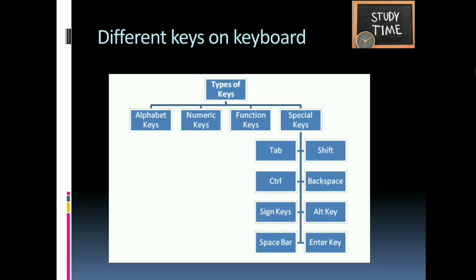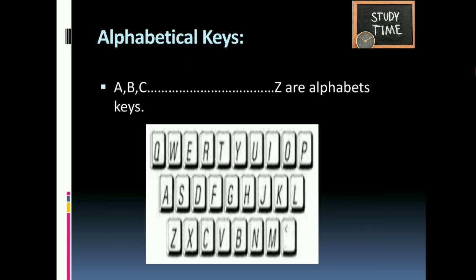Special keys include: Tab, Control, Shift, Backspace, Alt, Space Bar, and Enter key. Alphabet keys — A to Z — there are 26 alphabet keys on the keyboard. Whenever you press these keys you can see the letters displayed on the screen.